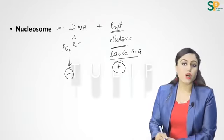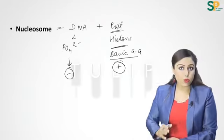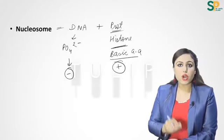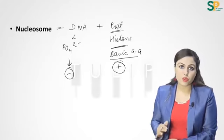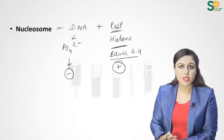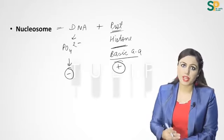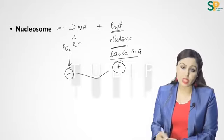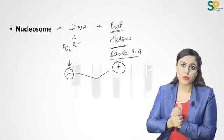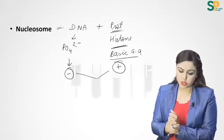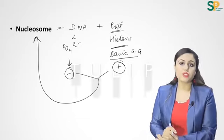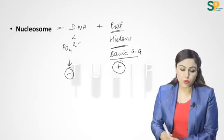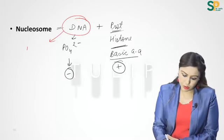DNA has lots of phosphates on it, so DNA has a negative charge — a direct exam question. Since DNA is negatively charged and histone proteins are positively charged, they are tightly bound to each other because of the opposite charges, making tight compact structures known as nucleosomes.